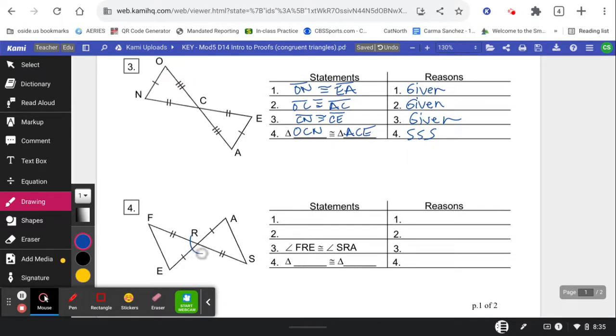Okay, for this next one we're going to need these vertical angles, because all we were given is two sides otherwise. So side FR is congruent to side SR. Side ER is congruent to side AR. And angle FRE is congruent to angle SRE by vertical angle theorem. And then triangle FRE is congruent to triangle SRE by side angle side.